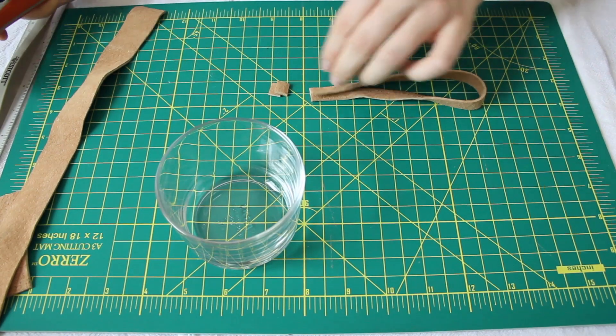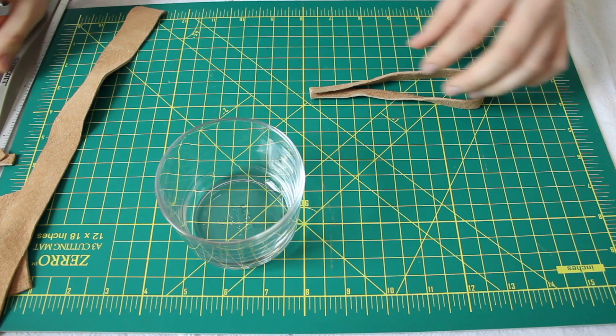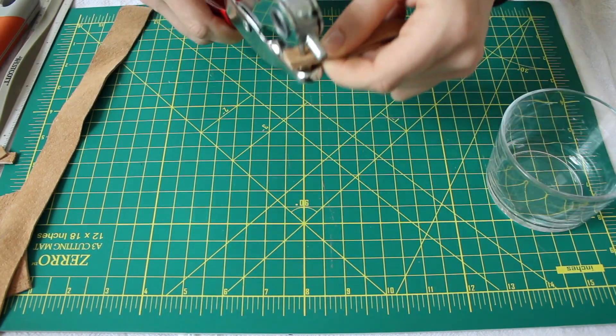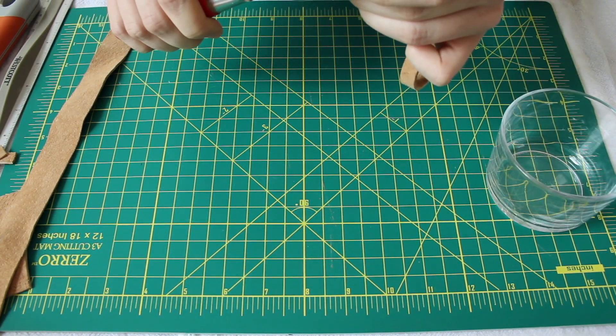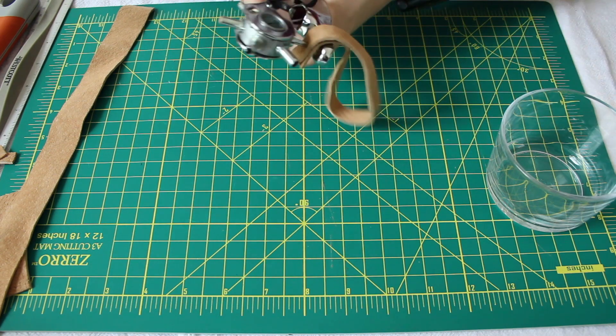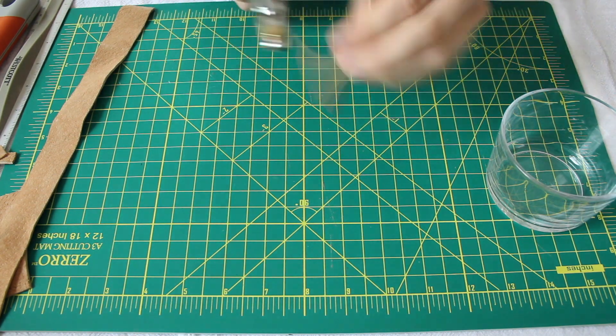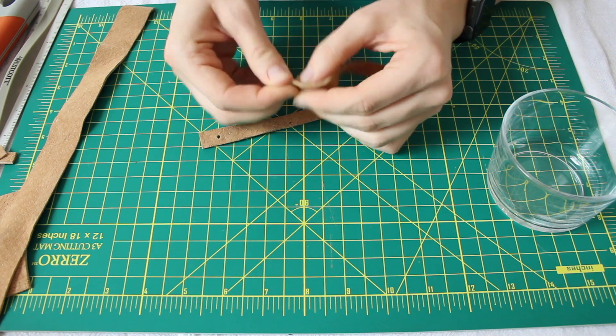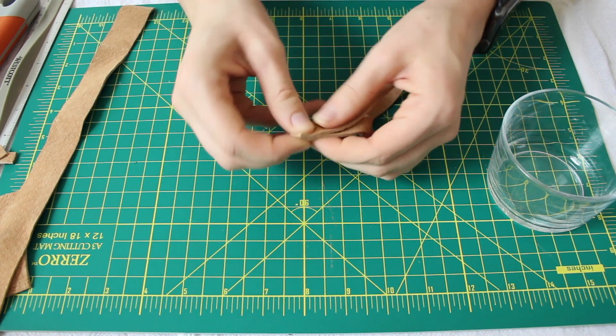Now we're going to have to do the last step which is putting in the rivets. To do this we're going to need to punch holes in the leather. I'm using a leather hole punch that I had but I purchased it from Michaels. Some rivet kits also come with leather hole punches. You're just going to stick one rivet in the back.